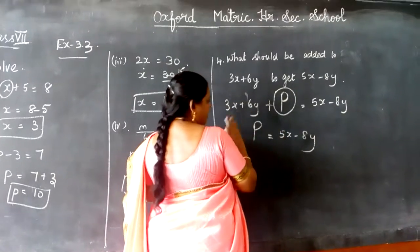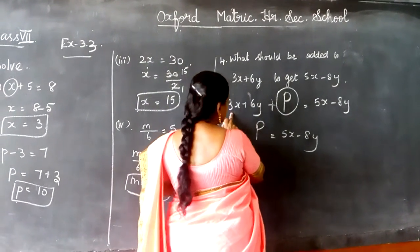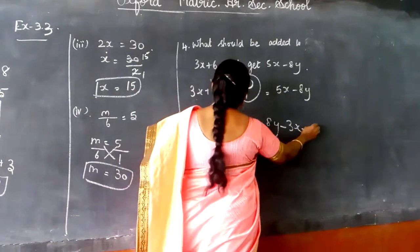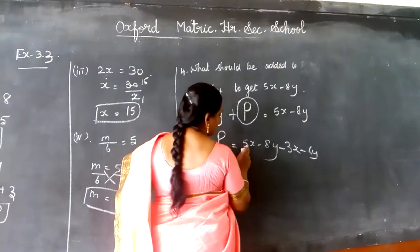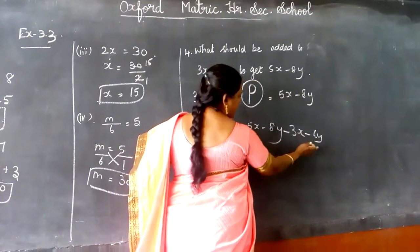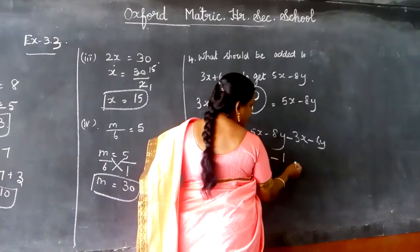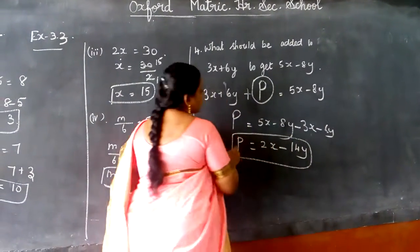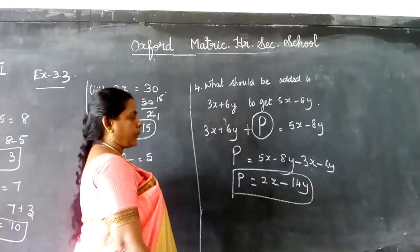So now this plus will change to minus 3x and this plus 6y changes into minus 6y. So 5x minus 3x is 2x and minus 8y minus 6y is minus 14y, which is the value of t. So this is the answer for this question.